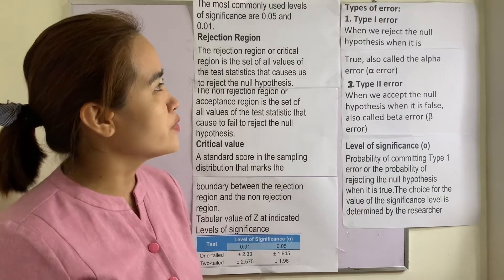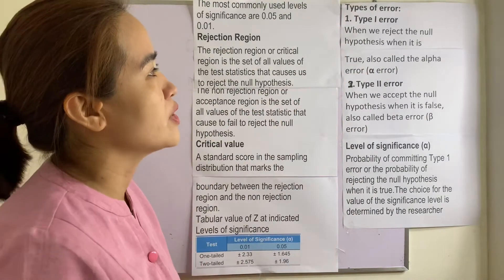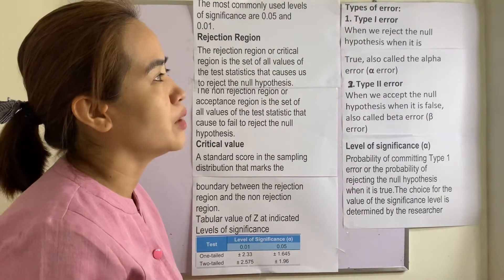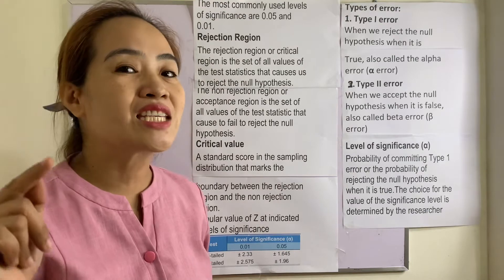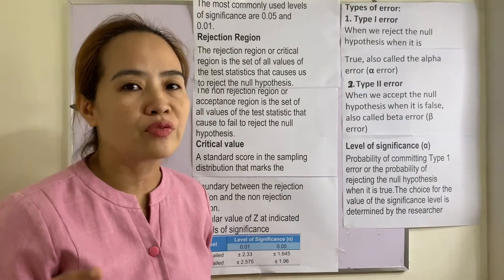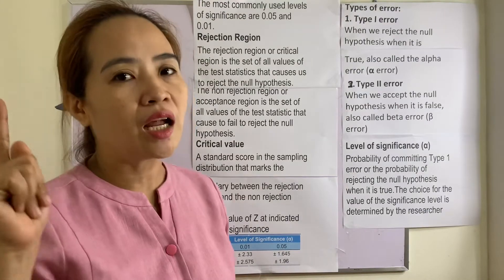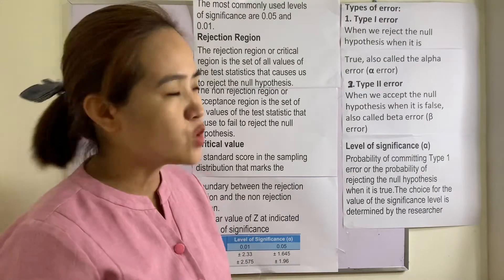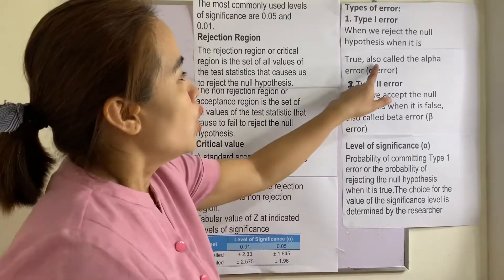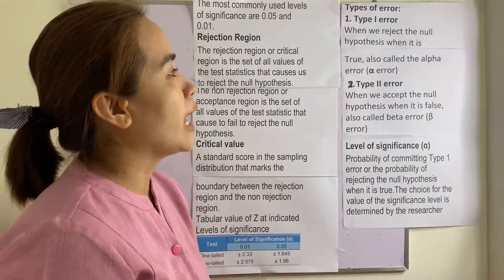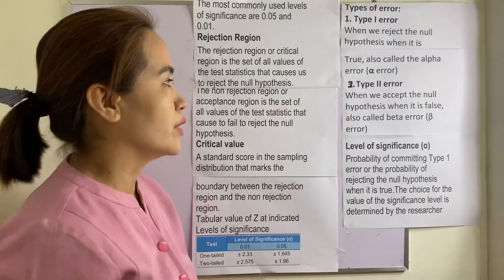There are two types of error. Type 1 error is when we reject the null hypothesis when it is true. Take note of that — we reject the null hypothesis when it is true. This is also called the alpha error.